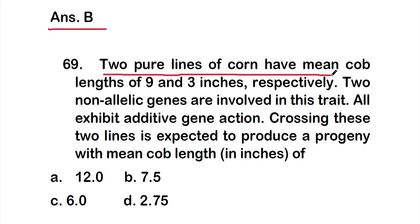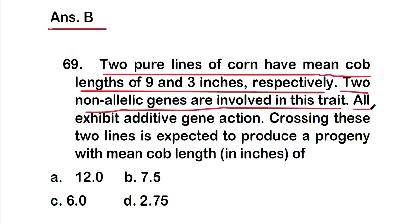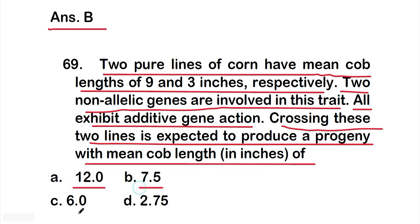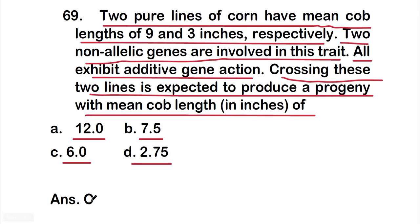Question 69: two pure lines of corn have mean cob lengths of 9 and 3 inches respectively. Two non-allelic genes are involved, exhibiting additive gene action. Crossing these two lines is expected to produce a progeny with mean cob length of — Option A: 12, Option B: 7.5, Option C: 6, Option D: 2.75. The right answer is Option C — 6 inches.